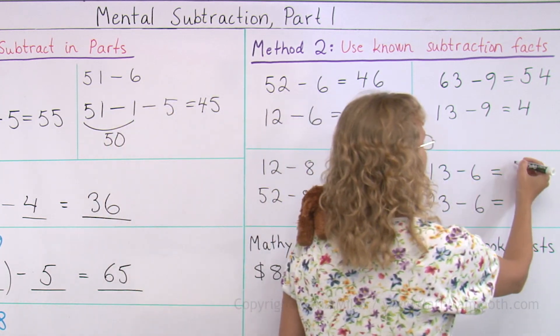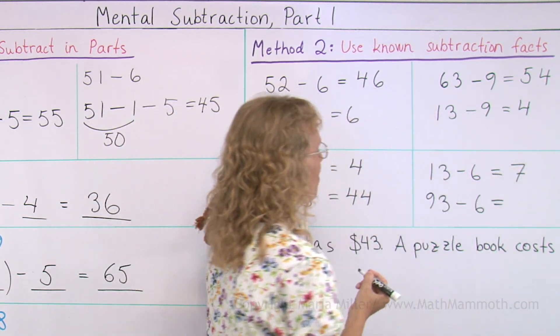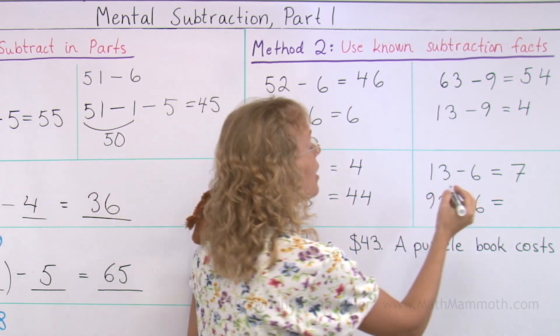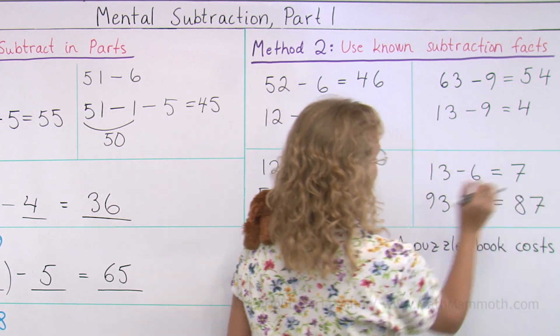13 minus 6. 7. So 93 minus 6. In the previous 10, 80, and then ending in 7.